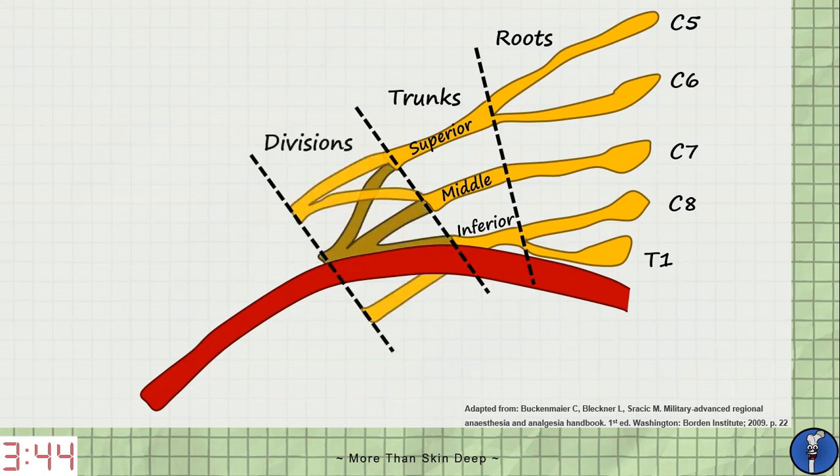Next, the trunks branch and join into anterior and posterior divisions with the posterior divisions shown darker here. All three trunks contribute to the posterior division. The superior and middle produce one anterior division and the inferior produces its own anterior division. The anterior divisions will go on to supply the anterior compartment of the arm and forearm and the posterior divisions will supply the posterior compartments.